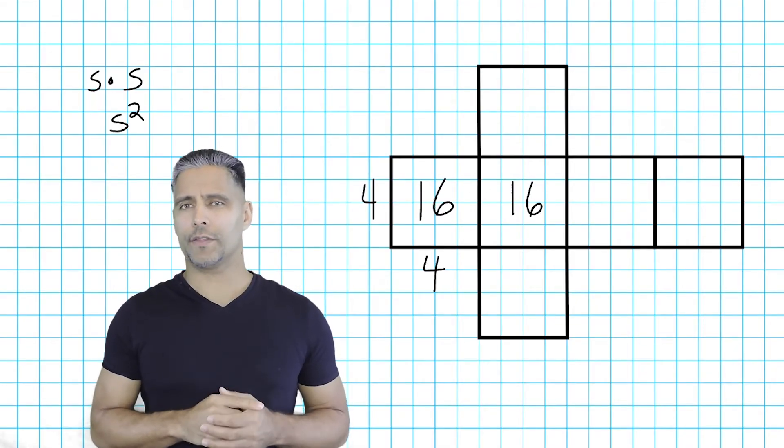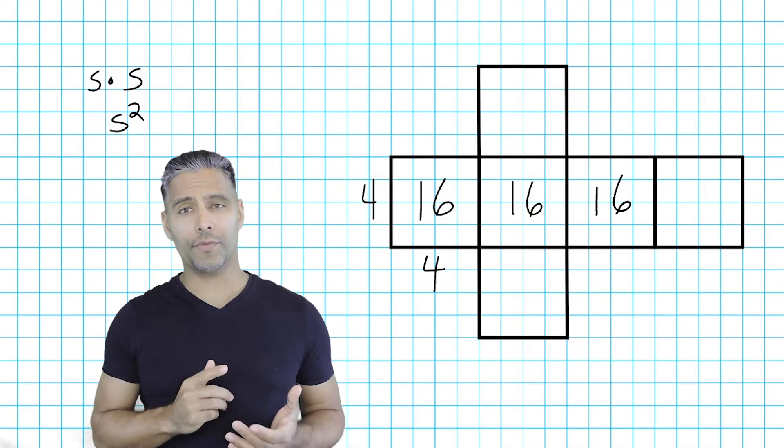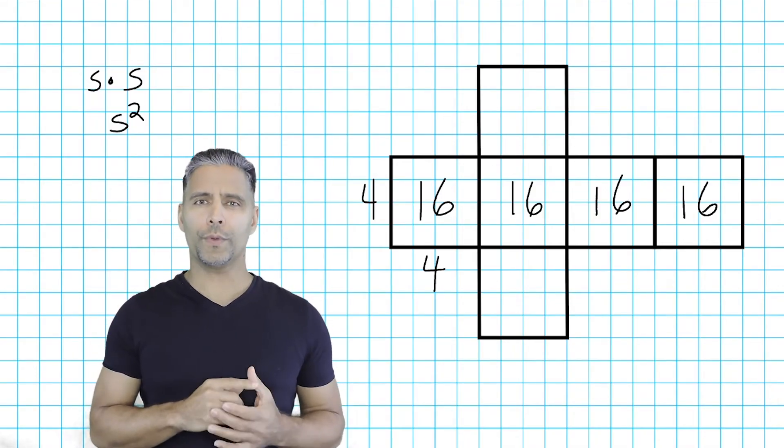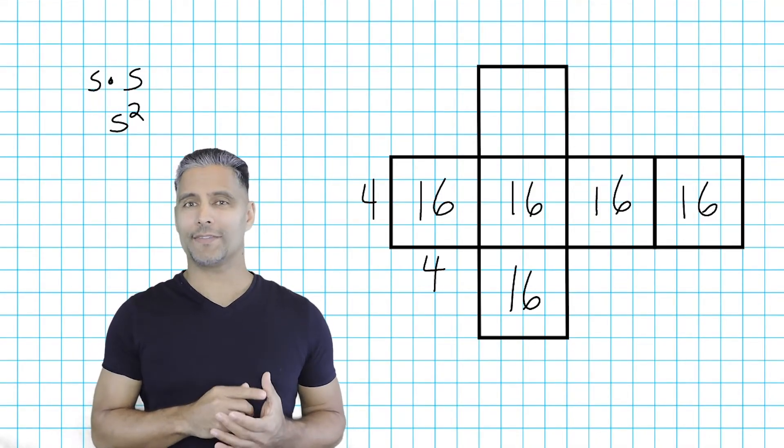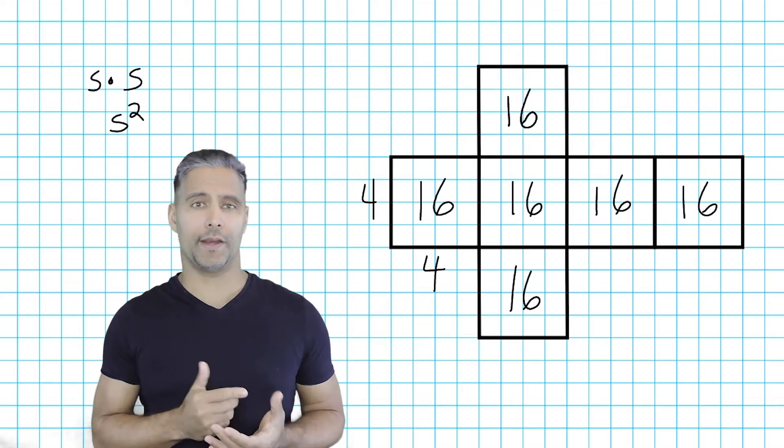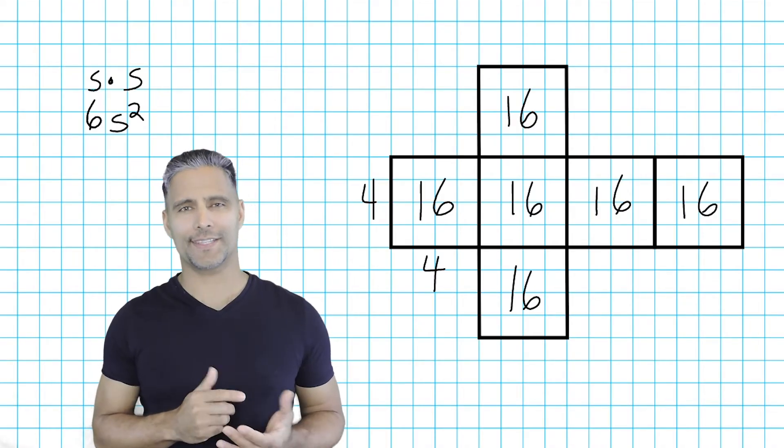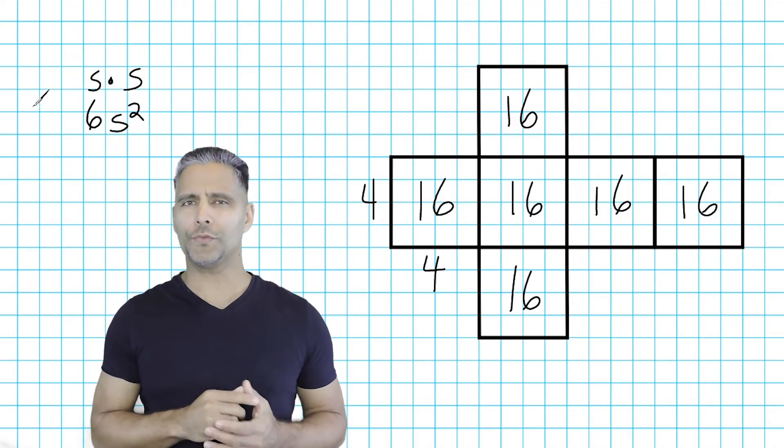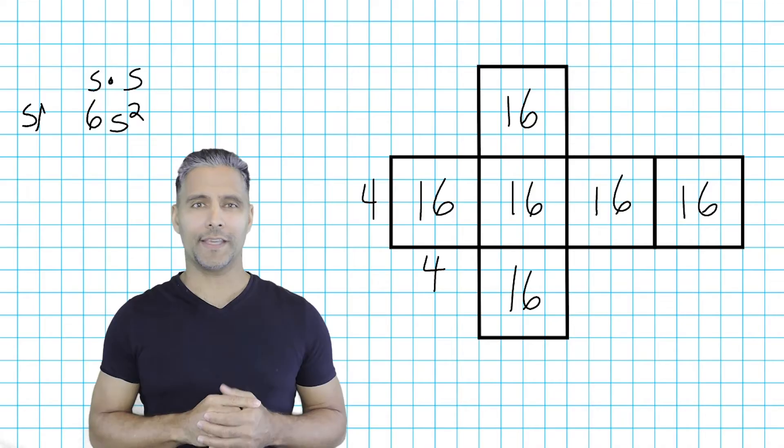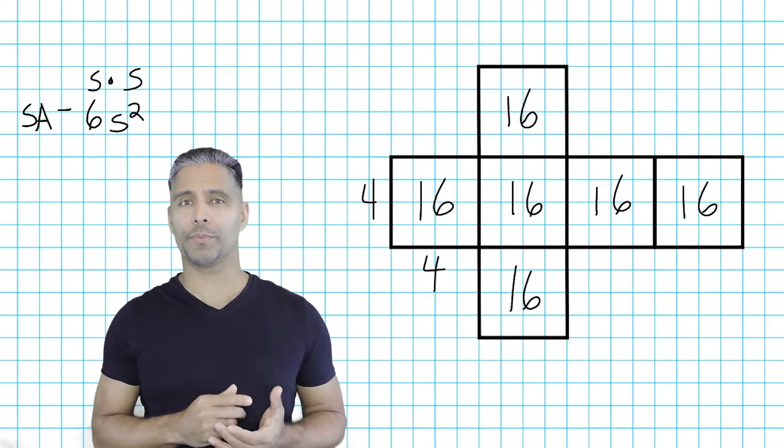Now, altogether, we have six congruent squares that cover our cube. So, we would summarize this by saying we have six sets of squares with an area of 16 square centimeters. We can express this as 6 times s to the second power. This formula summarizes that the area of one square is being multiplied by 6.